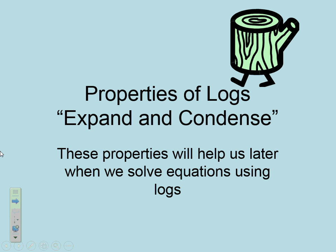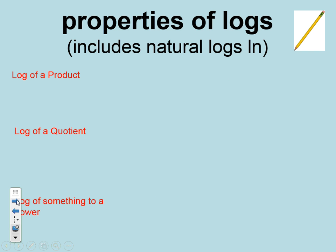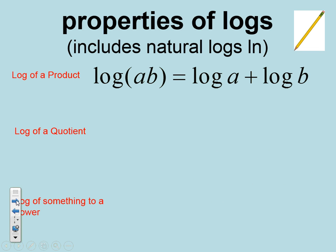It's very, very important that we get this all in our notes and we have a firm understanding of what's going on. These are our properties, so please make sure that they get into your notes. The first property we're going to talk about is the log of a product. Product means that we're multiplying. This is our condensed form. When we're multiplying, to expand it out, we're going to separate it and we're going to have log a plus log b.